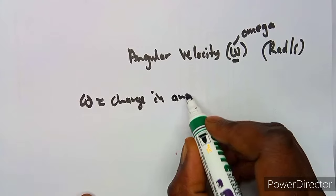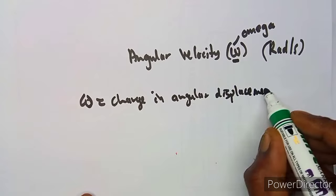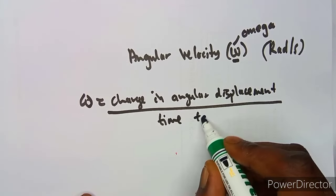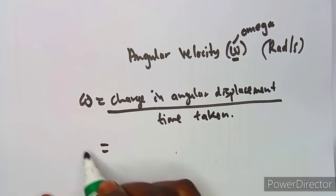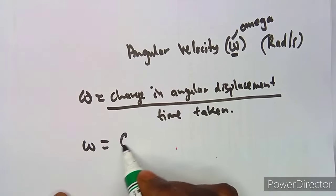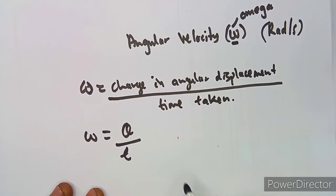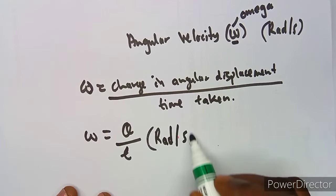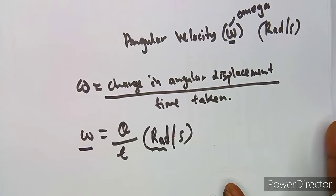That is the change in angular displacement over the time taken. So ω = Δθ / Δt. Since theta is measured in radians and time is measured in seconds, the unit of angular velocity is radians per second (rad/s).